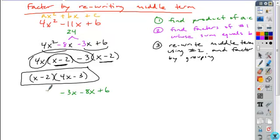If we drop the first and last terms down and factor by grouping, let's see what happens. What common factor can you remove from the first pair of terms? x, leaving 4x - 3.